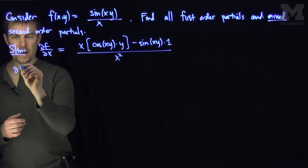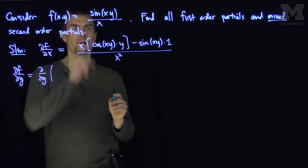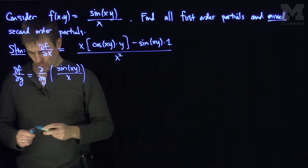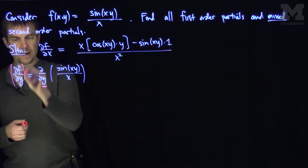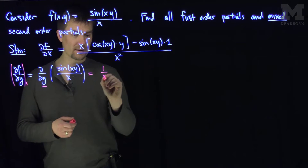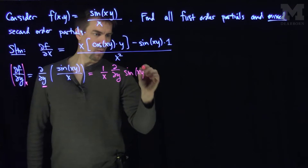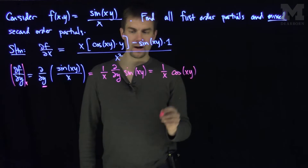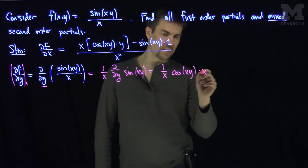Let's compute ∂f/∂y. ∂f/∂y is the partial with respect to y of sin(xy)/x. Now with respect to y, we're treating x as a constant. So this x in the denominator is a constant, so I can pull it out. This is 1/x, a constant, times the partial with respect to y of sin(xy). So this is going to be (1/x) · cosine(xy) · x, where the derivative of xy with respect to y is x, and the x will cancel with the 1/x.